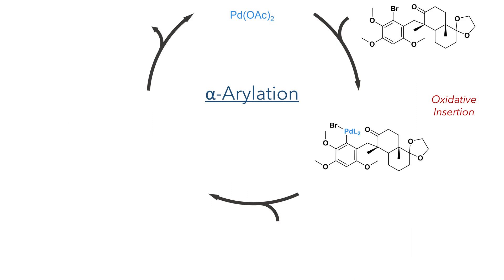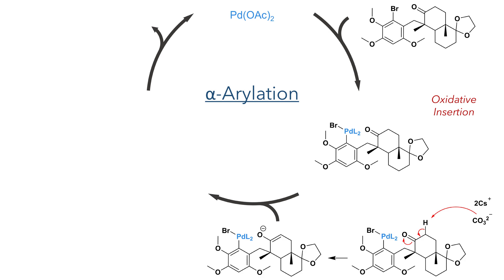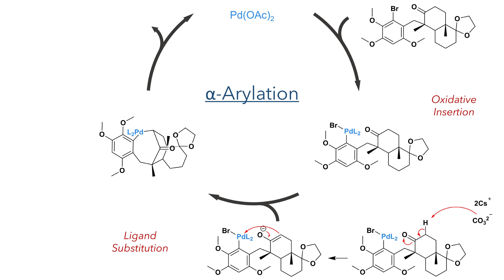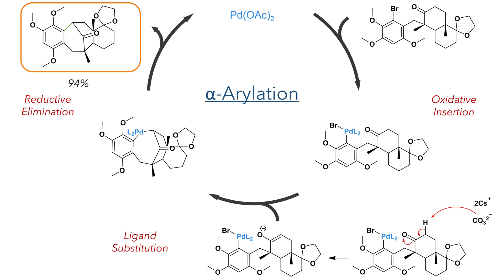To synthesise Dissi-Fraglone C, the ketone intermediate was reacted in an alpha-arylation, again using a palladium catalyst — this time palladium diacetate. As before, the first step was an oxidative insertion into the carbon-bromine bond. An enolate is then formed, promoted by the presence of cesium carbonate. This undergoes a ligand substitution with the bromide ligand, forming a bond between the alpha position of the ketone and the palladium. This then undergoes a reductive elimination to produce the product in a 94% yield.